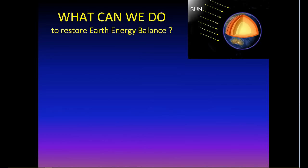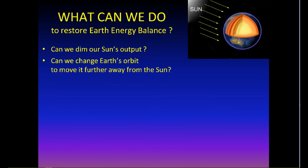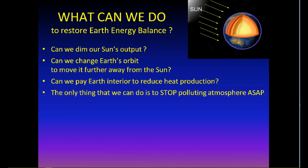What can we do? What can we do to restore Earth energy balance? The planetary interior desperately needs cooling. Can we dim our Sun's output? Can we change Earth orbit to move it further away from the Sun? Can we pay Earth interior to reduce heat production? The only thing that we can do is to stop polluting our atmosphere as soon as possible.